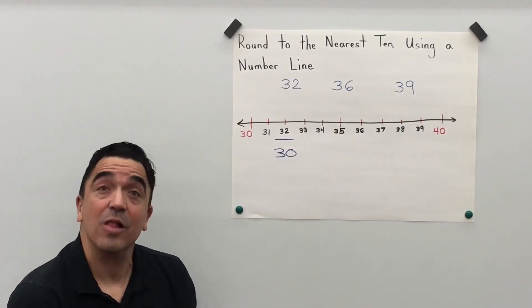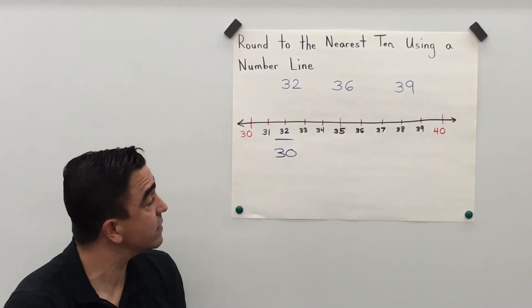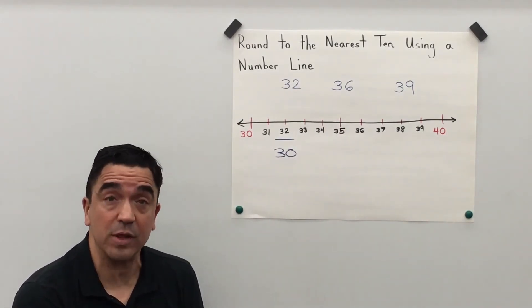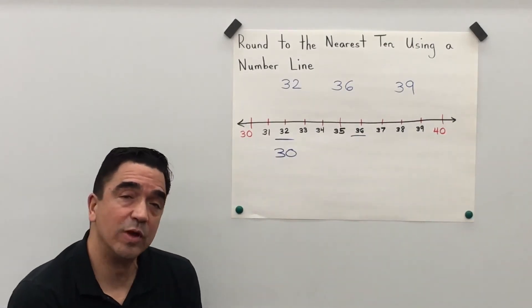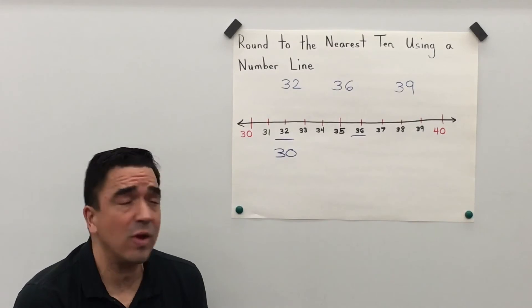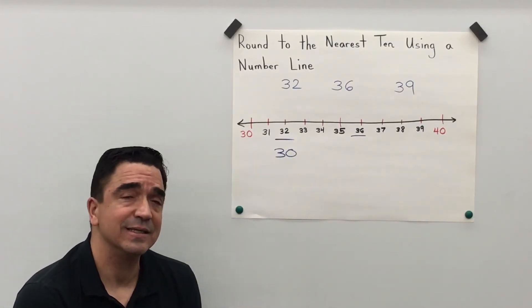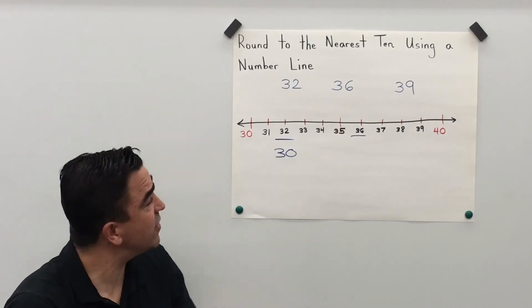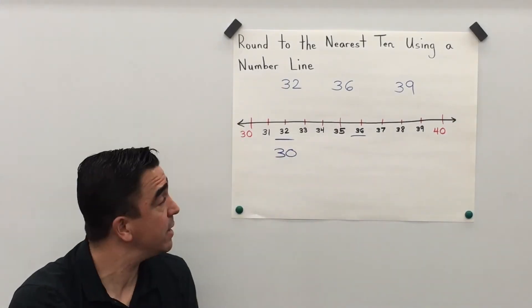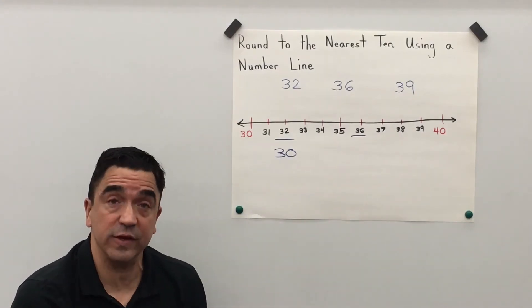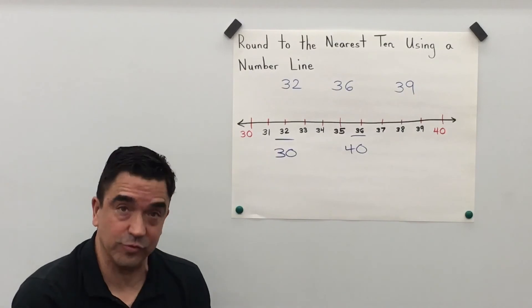Alright, let's look at our next number, 36. Let's find 36 on our number line. Okay, once again let's look at the ones place: 6. Well 6 is going to tell the 3 to go up. Therefore 36 is closer to 40.